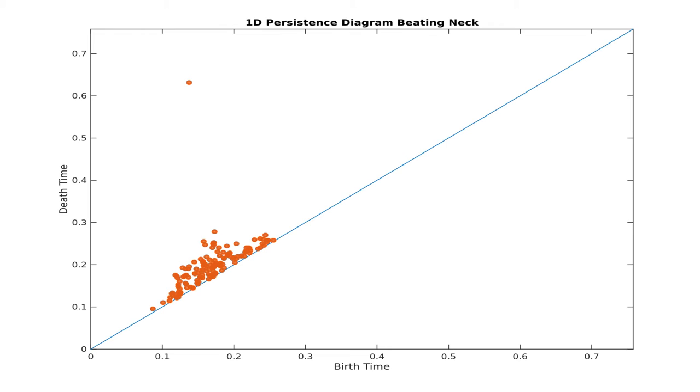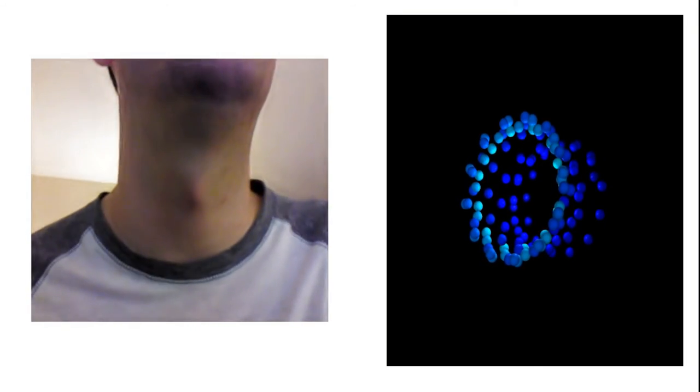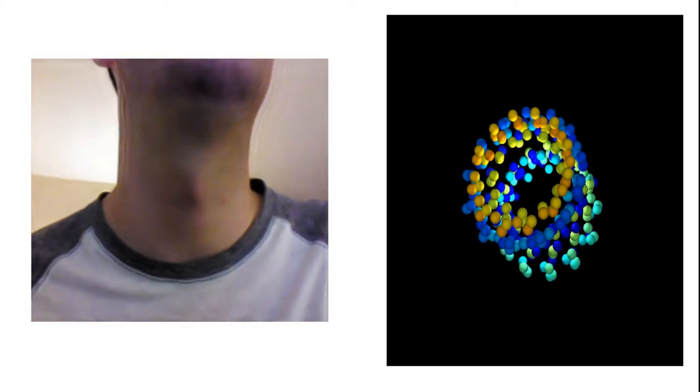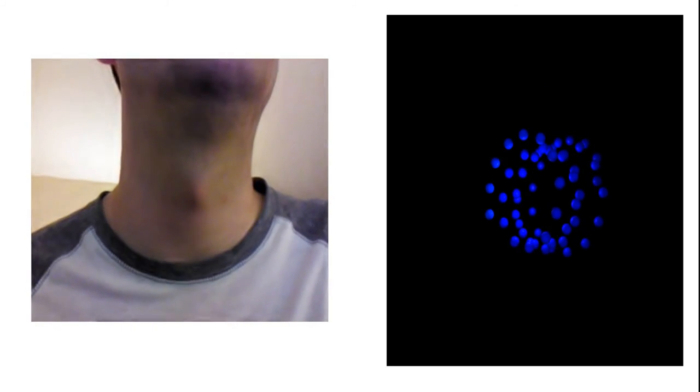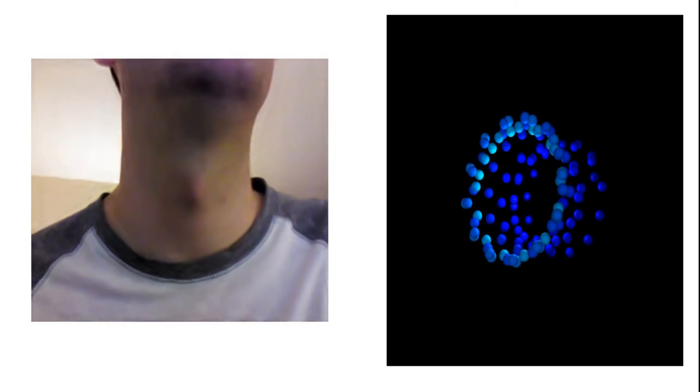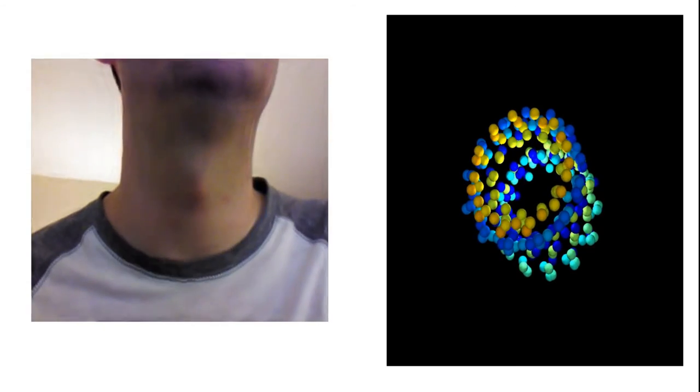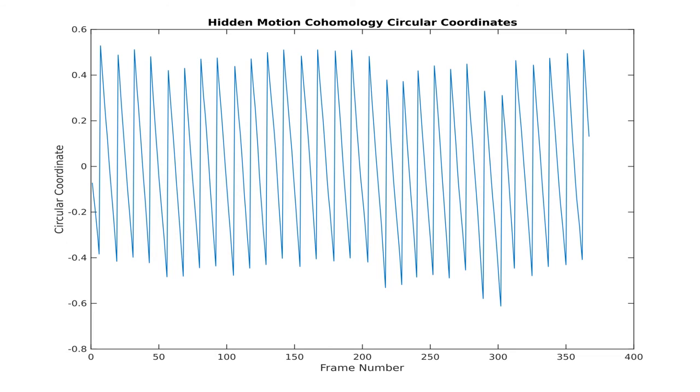And when we look at the 1D persistence diagram, we see a very strong 1D persistence class. What's going on here? If we apply phase-based video magnification techniques to the video to boost subtle signals and show PCA again, we see what's actually been captured by the sliding window embedding is something related to the person's heartbeat. Notice for example how the subclavic artery causes the collarbone to move up and down with each heartbeat. And notice how the person shakes back and forth twice for each heartbeat. It's the shaking that causes the delay embedding to go through two loops for each beat. Indeed, the cohomology circular coordinates parameterize this motion nicely.